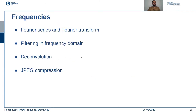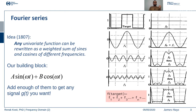Another way of thinking about frequency is when you look at an image, how many different pixel values are there and how frequently those values occur. In the Fourier domain or frequency domain, we are essentially handling images using frequencies. We are going to cover Fourier series transforms, filtering in this domain, deconvolution, and one specific example of JPEG compression using this frequency analysis.